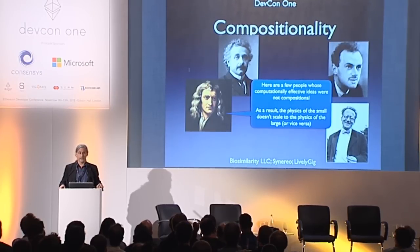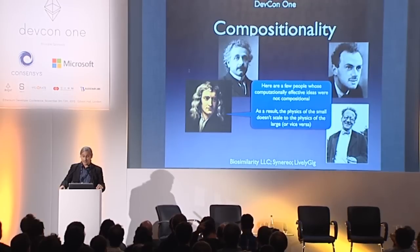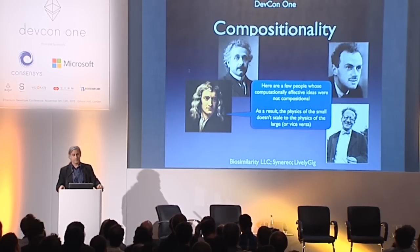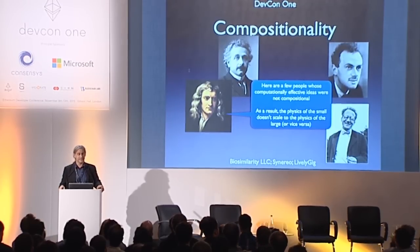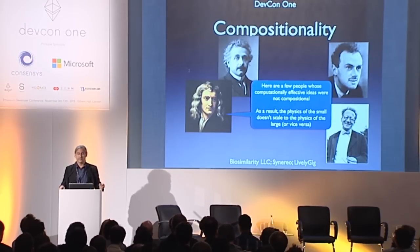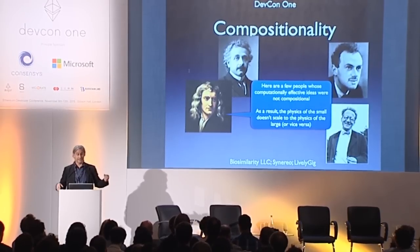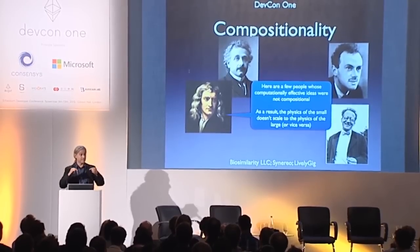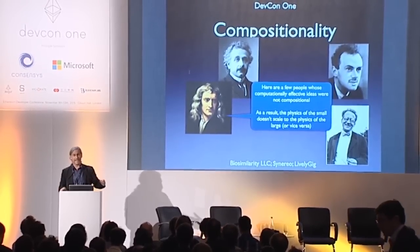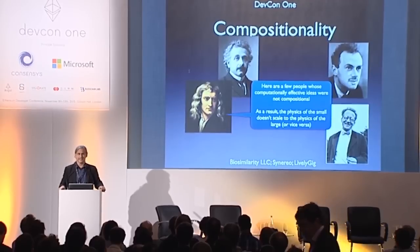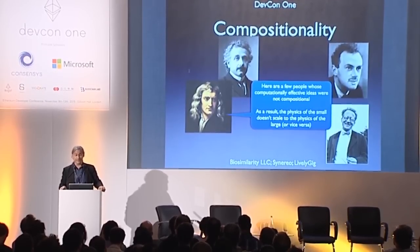A similar thing has happened in the physics of the large — gravitation and cosmology. Because we don't have good compositional accounts, physics fails to scale. We don't have a nice way to marry those two ideas. So if you're feeling like you're not quite sure what compositionality is — well, these guys didn't either, so it's kind of okay.